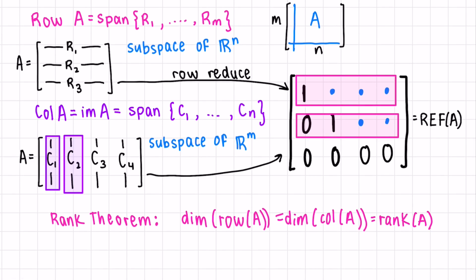Where rank, remember, is just the number of leading ones. Next, if we want to put into words what we just showed, we can say the R non-zero rows of the row echelon form of our matrix form a basis of row A.